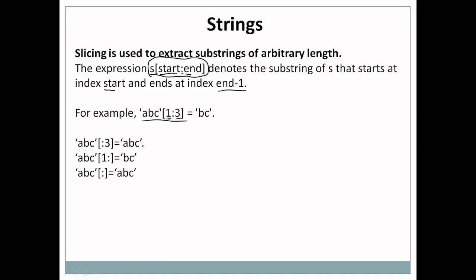For example, 'abc'[1:3] means extract a substring starting at index 1 and ending at 3 minus 1, which is 2. At position 1 we have 'b' and at position 2 we have 'c', so the output of this example is 'bc'.